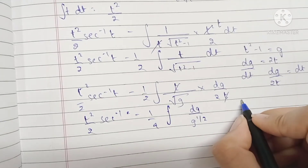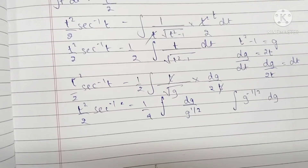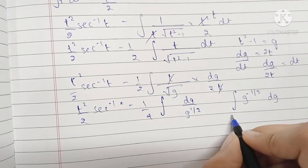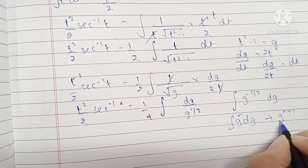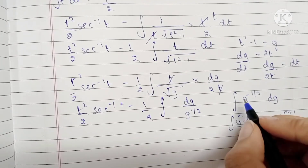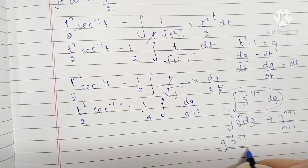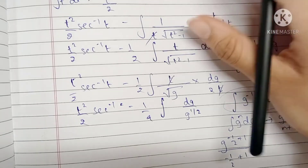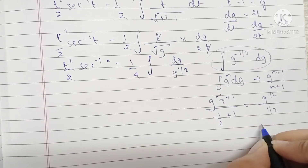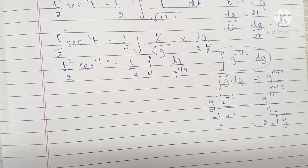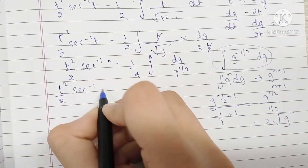The integral of g^(−1/2) dg uses the power rule: g^(n+1)/(n+1). With n = −1/2, we get g^(1/2)/(1/2), which equals 2√g. So placing this back, we have t²/2 · sec⁻¹(t) minus (1/4) times 2√g, which simplifies to t²/2 · sec⁻¹(t) minus (1/2)√g.